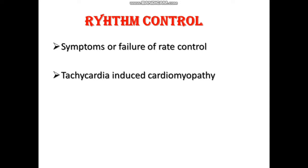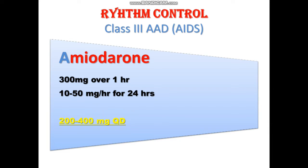Next comes rhythm control. We employ rhythm control when there are symptoms despite the use of rate control medications A, B, C, D, or when those medications fail. Another indication is tachycardia-induced cardiomyopathy. The drugs used for rhythm control are class 3 antiarrhythmic drugs, remembered with the mnemonic AIDS: A for amiodarone, I for ibutilide, D for dofetilide, another D for dronedarone, and S for sotalol.